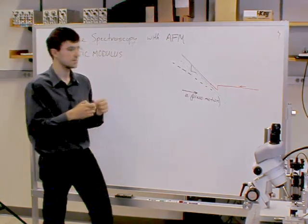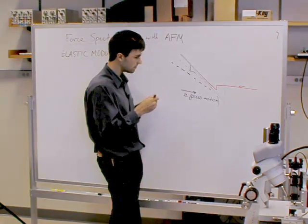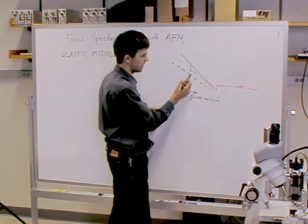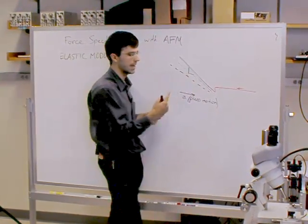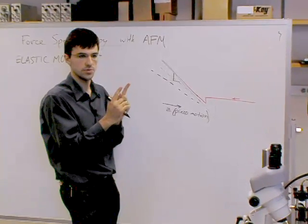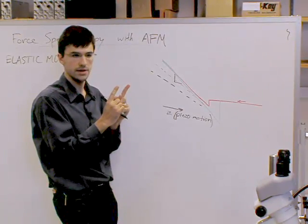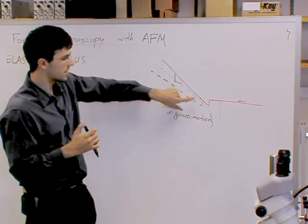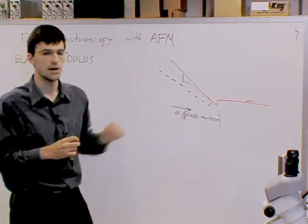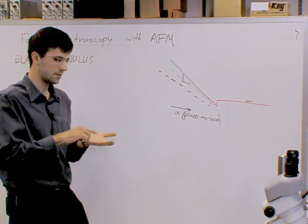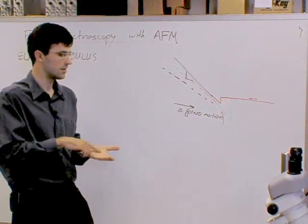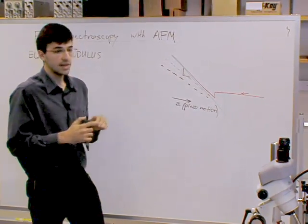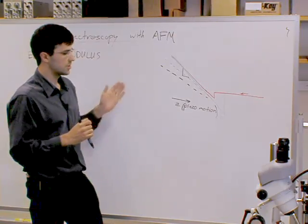But the idea is simply that a material that's compliant that you're going to be indenting with the probe will, as the stage moves, it'll deflect the cantilever less than it would if the material were hard. So the difference between the motion of the stage and the indentation of the cantilever will give you the actual distance through which the material has been indented. Does that make sense? So let me say that again.